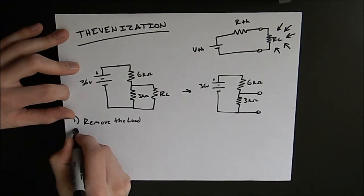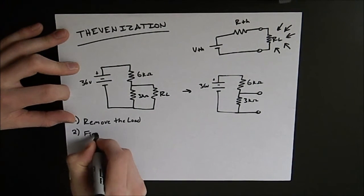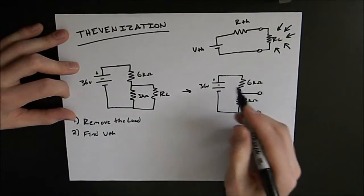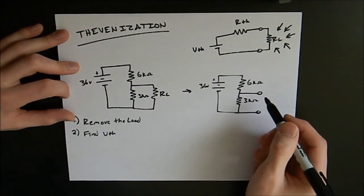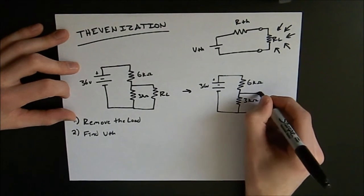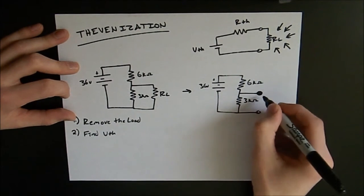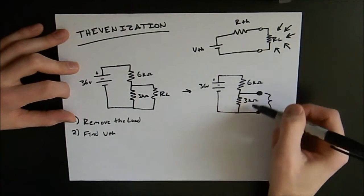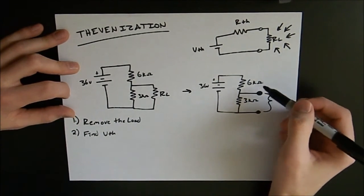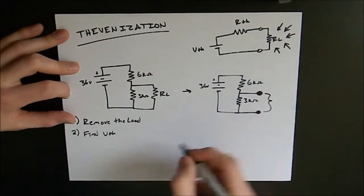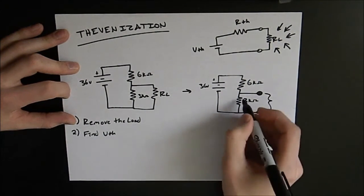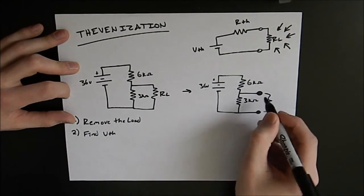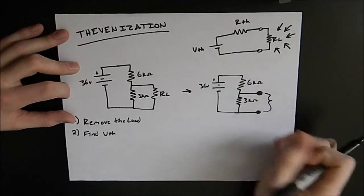Okay, once we do that we're going to find the Thevenin voltage. Now the Thevenin voltage is going to be the equivalent voltage of this circuit. So what we're going to do is find the voltage that exists right here between these terminals where our load typically goes. And to do that we're going to look at this voltage divider circuit. What we find is that if we do the voltage divider the voltage across this 3 kiloohm resistor is going to be the voltage that's going to go across our load because they're in parallel with each other.